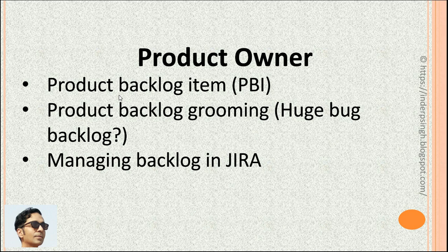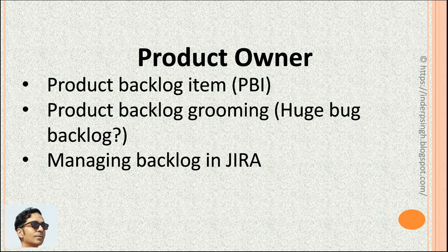A Product Backlog Item (PBI) is an item like a feature, a user story or another task in the Product Backlog. The Product Owner adds a PBI if it will give value to the customer. Product Backlog Grooming means Product Backlog Refinement — the Product Owner can review the PBI and add, update (for example by adding details), or remove unnecessary PBIs like duplicates, to make the Product Backlog ready for the developers.